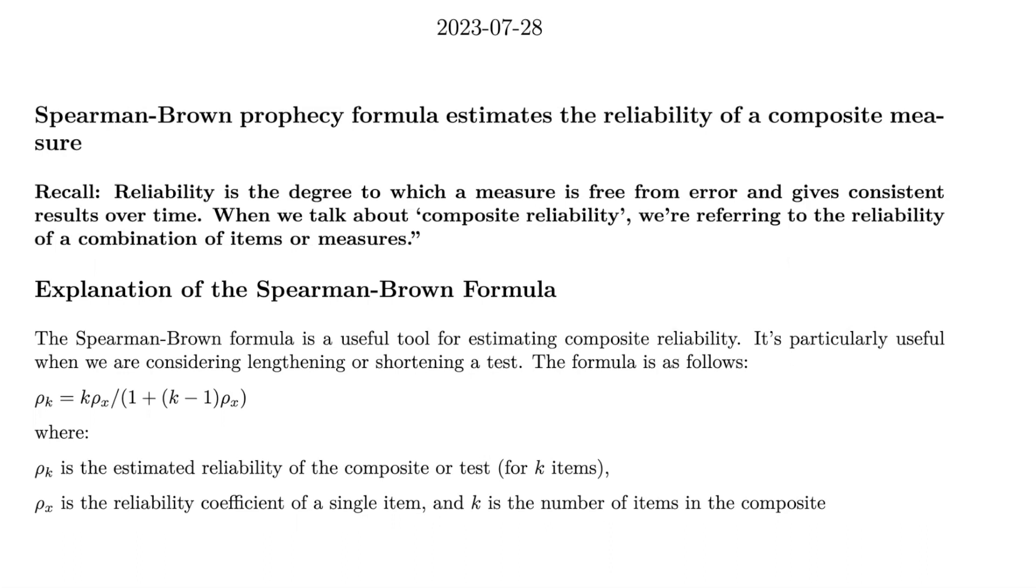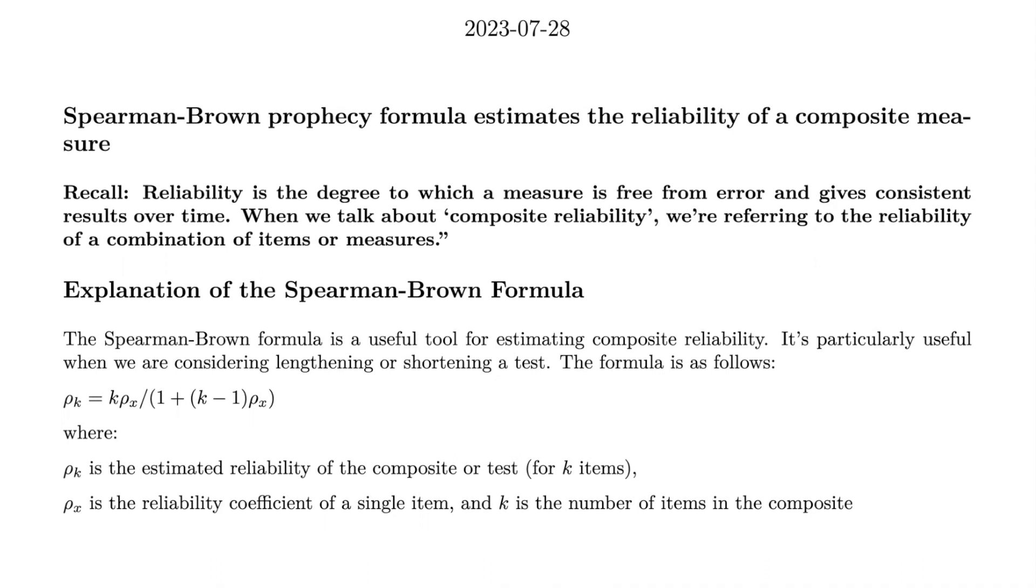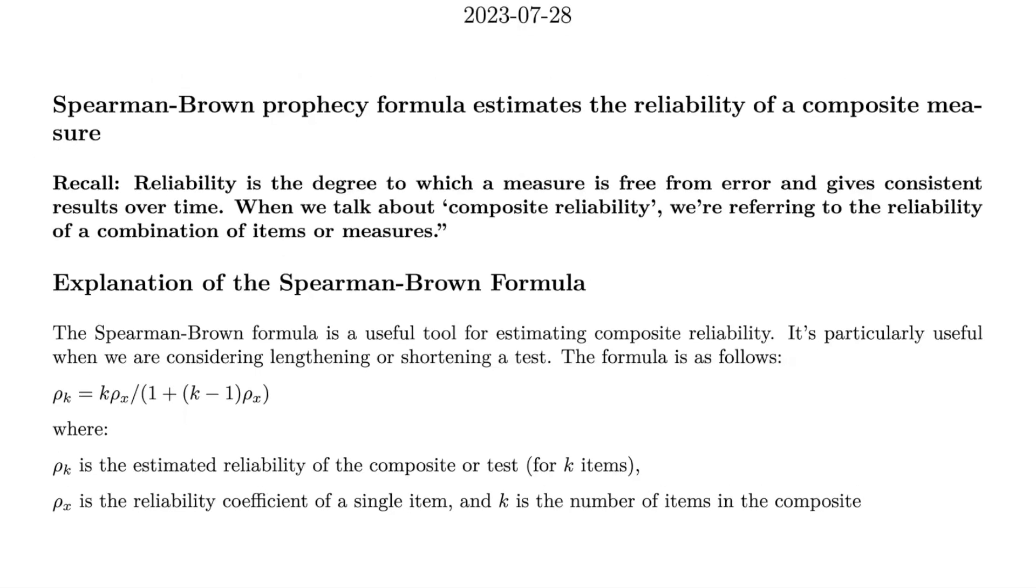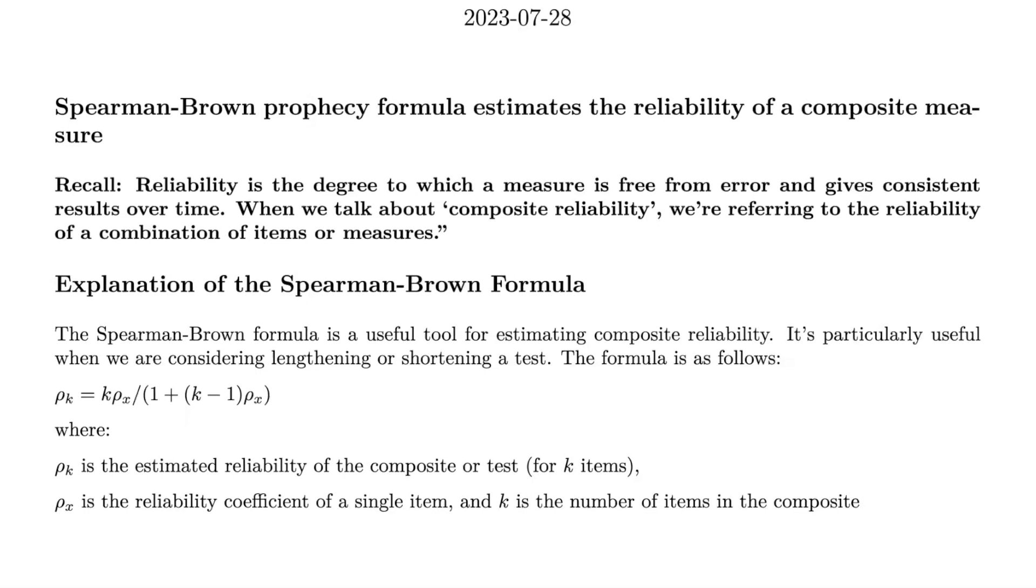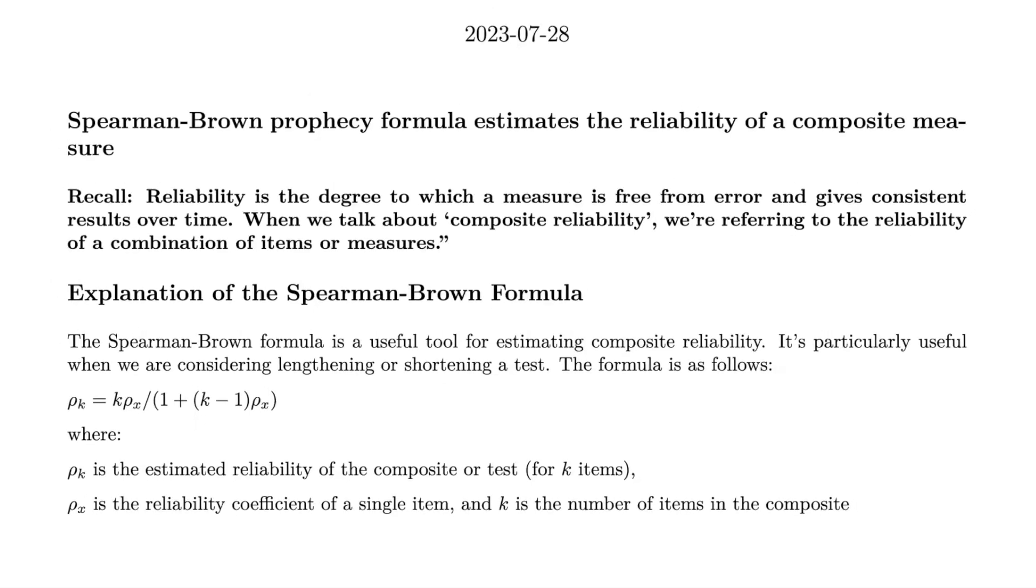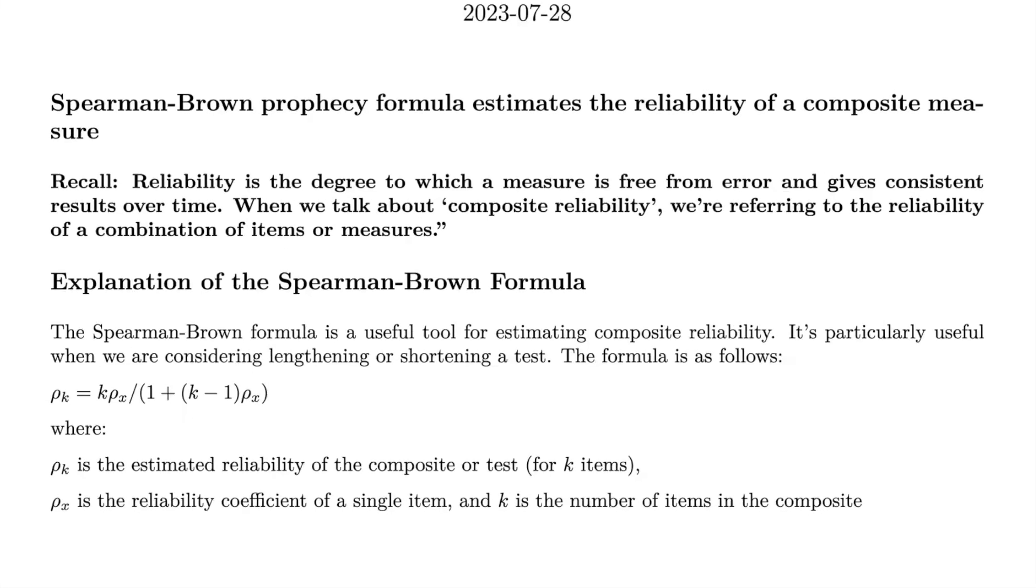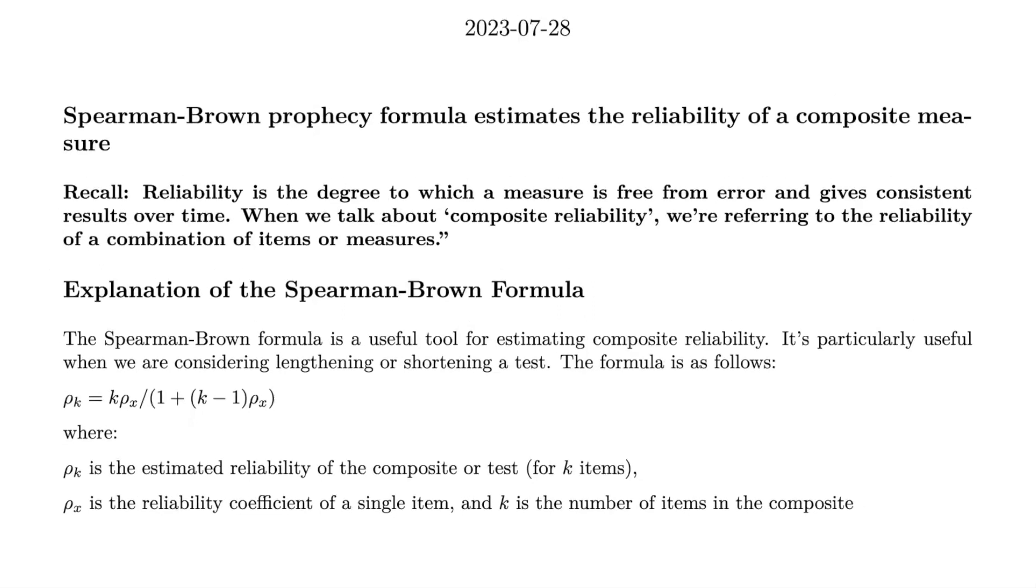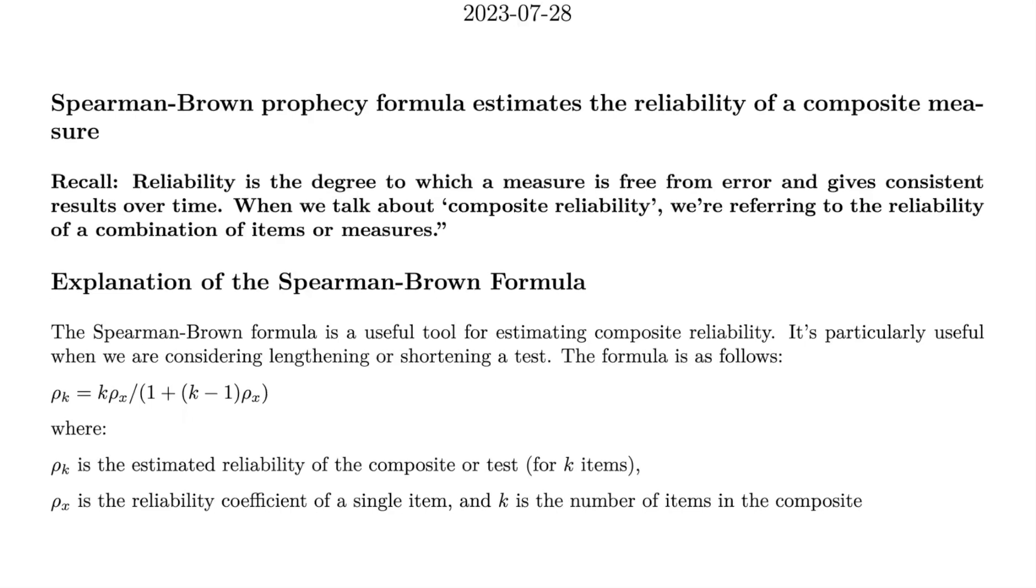The Spearman-Brown prophecy formula is an invaluable tool in such situations. This formula shines, especially when we're contemplating whether to lengthen or shorten the test. It helps us predict how such changes could impact our test reliability. The formula is ρₖ equals k times ρₓ divided by the sum of 1 and k minus 1 multiplied by ρₓ.